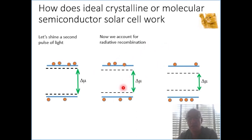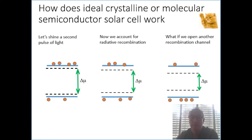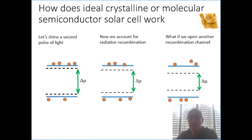In practical devices, usually besides the absorption and spontaneous emission, which are inevitable, there is always some kind of non-radiative or extrinsic or parasitic channel that adds some recombination to the system.